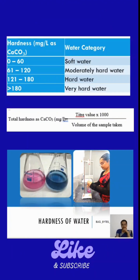After getting the endpoint — that is the blue color — use the formula given. For example, if the total EDTA volume used is 1.5 ml, then calculate 1.5 into 1000 divided by the 50 ml water sample taken to get the result. Using that result, classify whether your water sample is soft water, moderately hard, hard, or very hard using the classification table provided.